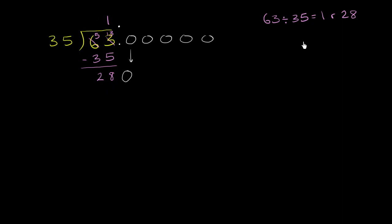So let's see what 35 times 8 is. 5 times 8 is 40. 3 times 8 is 24, plus 4 is 28. So it actually works out perfectly. 35 goes into 280 exactly 8 times.